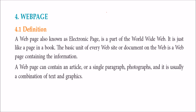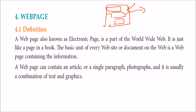What is a web page? You might have worked on Microsoft Word — you make a page, write something in the form of a paragraph, give spaces, insert images, insert a table. This page is simply a web page when you publish it in HTML on the internet. When it becomes available to users on the internet, this becomes an HTML page. A web page is also known as an electronic page, is a part of the World Wide Web, and is just like a page of your book. The web page may have articles, a single paragraph, photographs, or a combination of text and graphics.